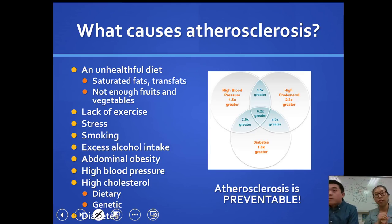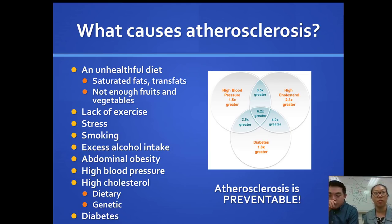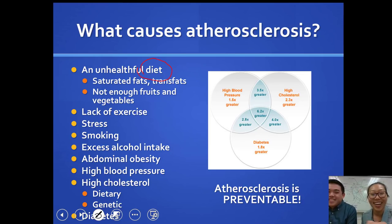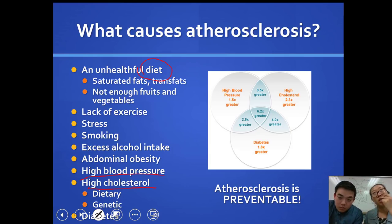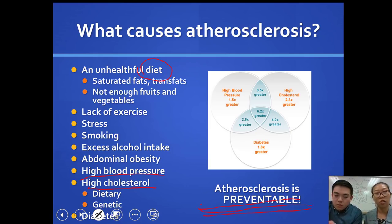There are many causes of atherosclerosis, and as we said, it's very much a lifestyle disease. These include high cholesterol, high blood pressure — which damages the arteries — as well as obesity, smoking, stress, and lack of exercise. That's why atherosclerosis is preventable. But unlike diabetes, it's not reversible — once the plaques build up, you kind of just have them forever.